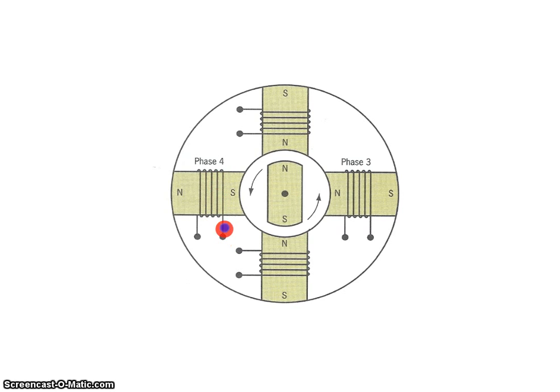So depending on which way the current is applied, it's going to either energize the pole south or negative, or it can energize it north or positive. We're going to refer to those as north as positive, south as negative. It's a little bit easier.